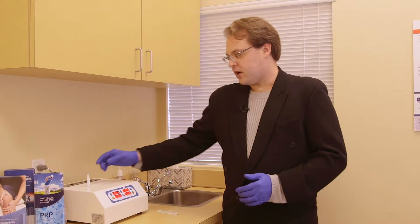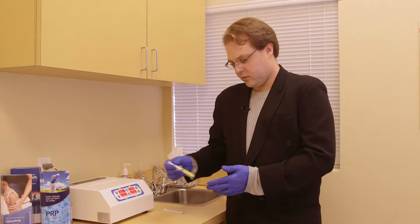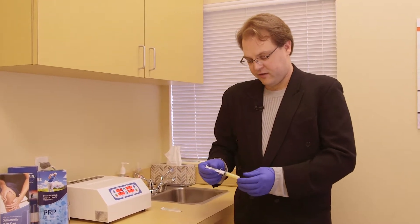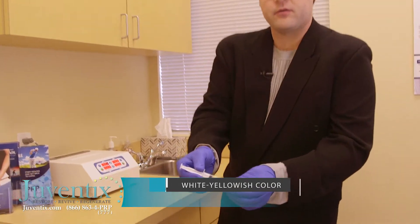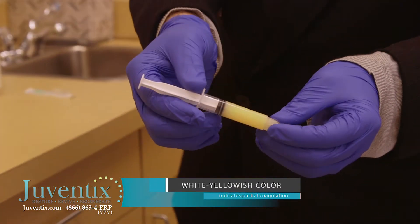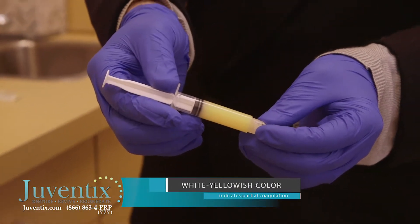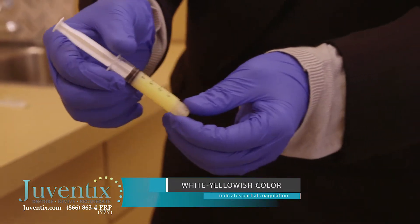Now that our blood has been processed in the heating process, we have partially coagulated plasma. You can see the difference in color. We're looking for a white-yellowish type color. This lets us know that the plasma has been partially coagulated.